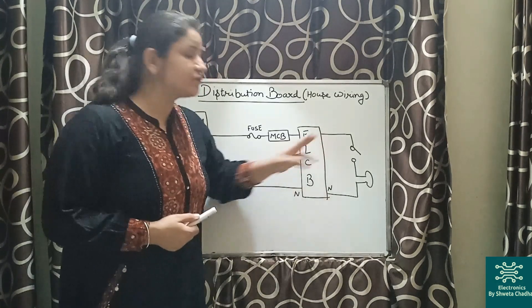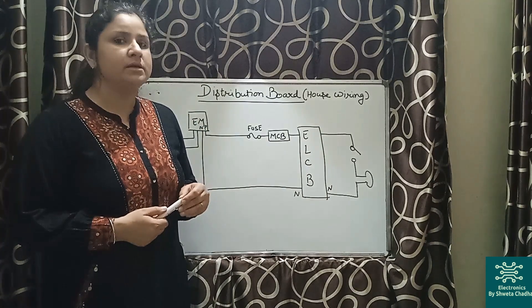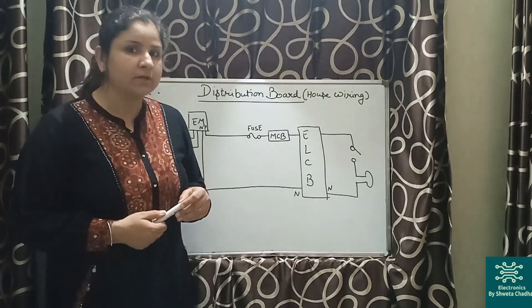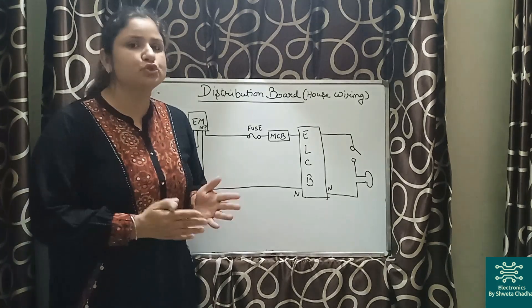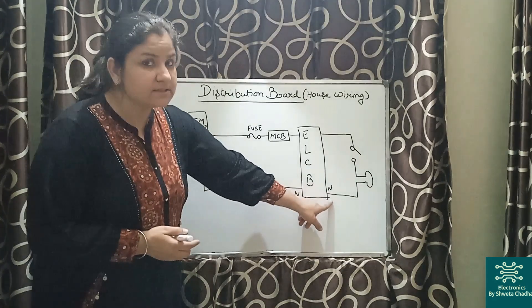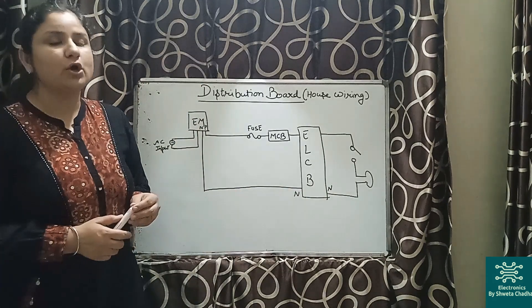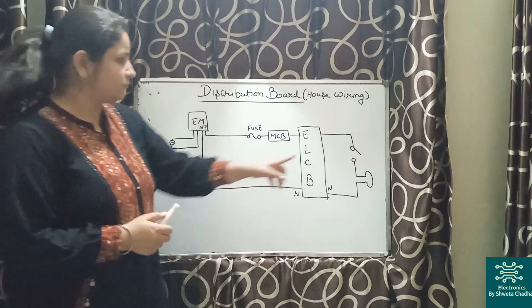On the other hand, the terminals where N is mentioned, N means the neutral connections must be done on these two terminals. So you can have a look over here, N, N. Where N is mentioned, those two terminals of ELCB will be connected with the neutral of energy meter.